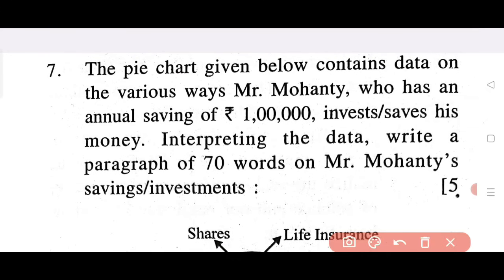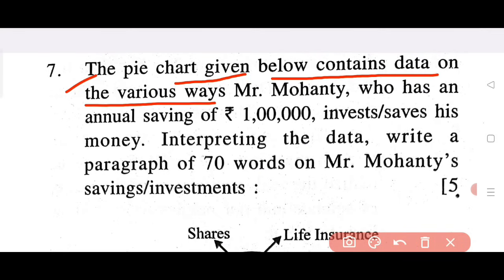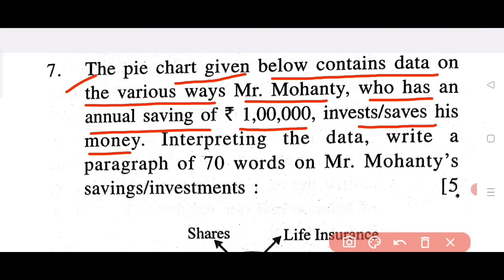The pie chart given below contains data on the various ways Mr. Mohanty, who has an annual saving of one lakh, invests and saves his money.